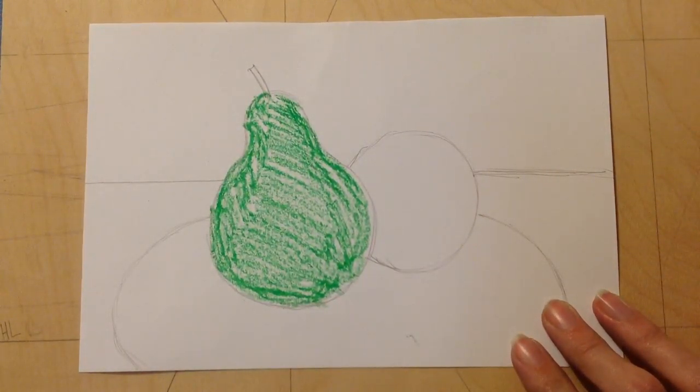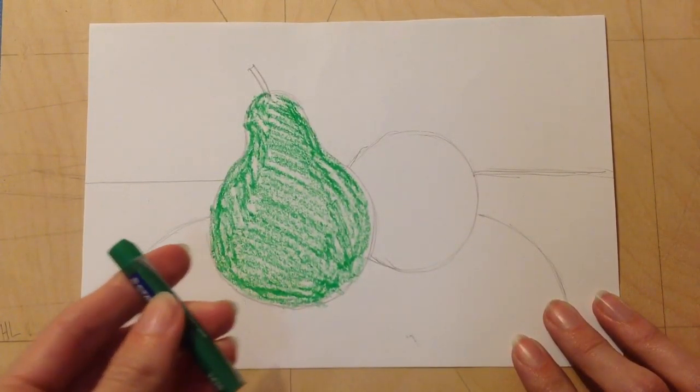So I can still see some white on my paper, and that's the way I want it right now. I've just colored it in lightly.